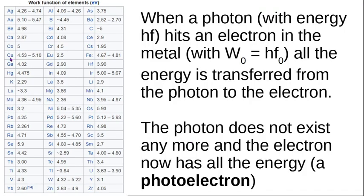You can see here there's a table of the different metals with their different work functions, given in electron volts which can be converted to joules. So when the photon hits the electron in the metal, all the energy is transferred from the photon to the electron. The photon doesn't exist anymore, and the electron takes all of its energy and is now called a photoelectron.